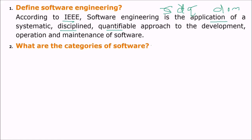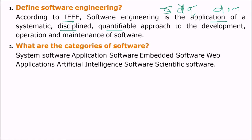What are the categories of software? Since software is utilized everywhere now, in every field and every regime of life, we have various categories: system software, application software, embedded software, web applications, AI (artificial intelligence) software, scientific software, and graphic software.